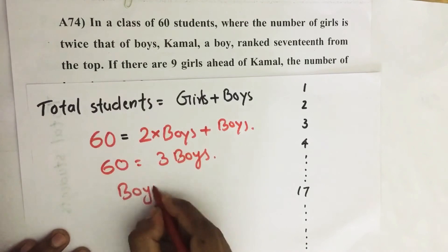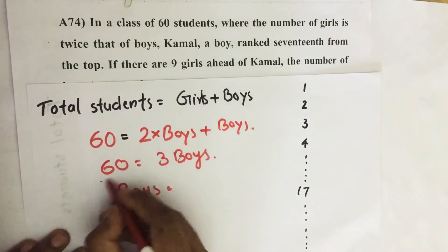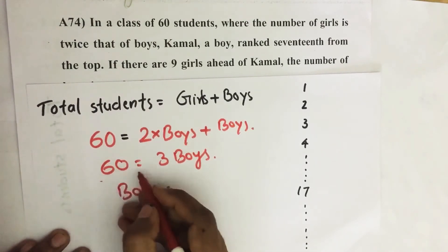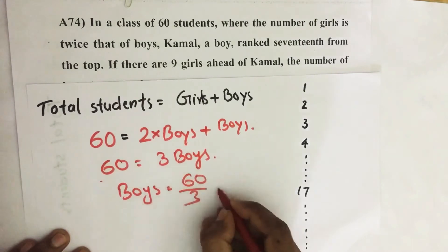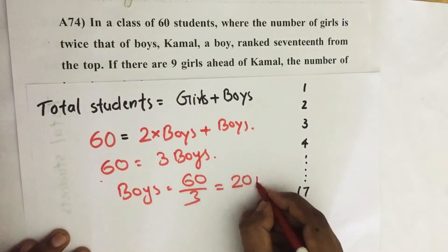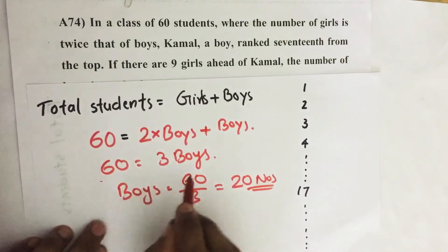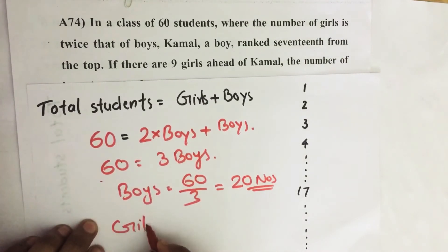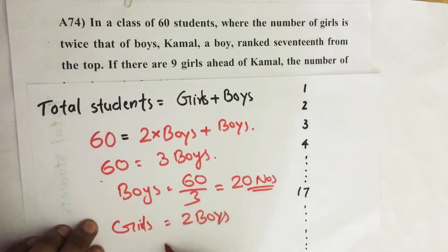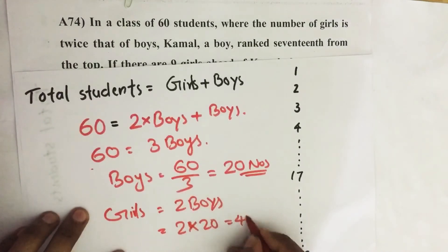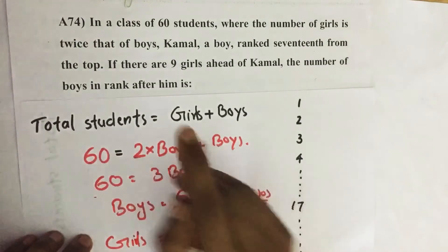So number of boys equal to, I'm taking this 3 to the left side, then it becomes divided by, then 60 by 3, we get 20 numbers. So this is the number of boys, and girls equal to 2 times of boys, that's equal to 2 into 20, we get 40.